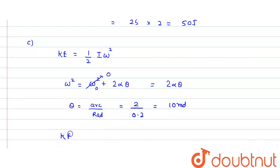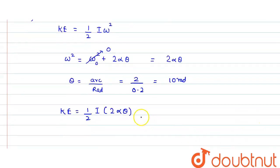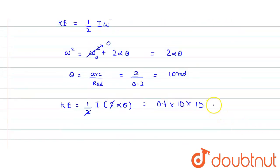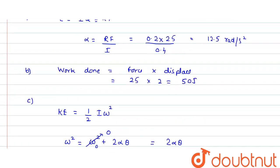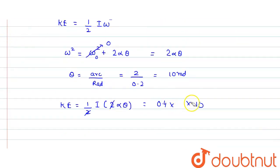Substituting into kinetic energy: KE equals half times I times 2 alpha times theta. The factor of 2 cancels, giving KE equals I times alpha times theta. With I = 0.4, alpha = 12.5, and theta = 10, the kinetic energy turns out to be 50 joules.